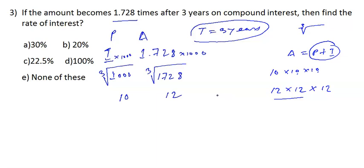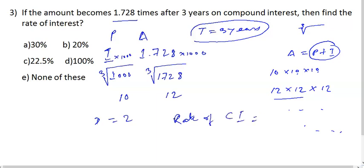The difference is 12 minus 10 equals 2. Therefore, the rate of compound interest is 2 upon 10 times 100, which equals 20 percent. So the answer is option B, 20 percent.